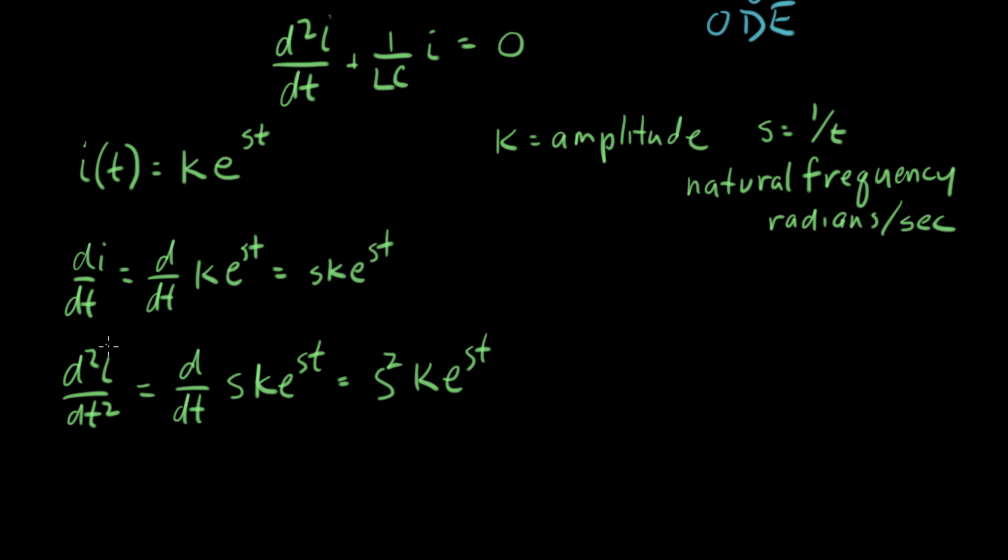Good, now we have our second derivative, we can plug that in here. So let's do that. So the equation becomes s squared k e to the st plus one over LC times k e to the st equals zero.